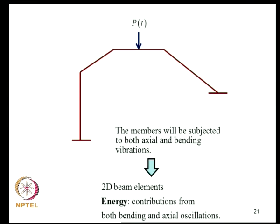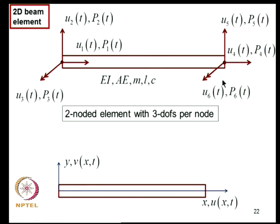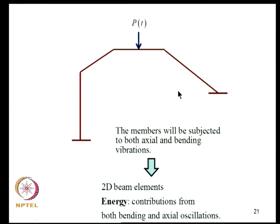Returning to the planar structure example: each element carries both bending and axial deformation, which is now handled by the 2D beam element. However, another complication arises — each member can be thought of as having a local coordinate system, while there is also a global coordinate system for the entire structure. For example, the global coordinate system might be horizontal/vertical, while a particular element's local coordinate system is inclined. We must describe the behavior of the entire structure in a common coordinate system.